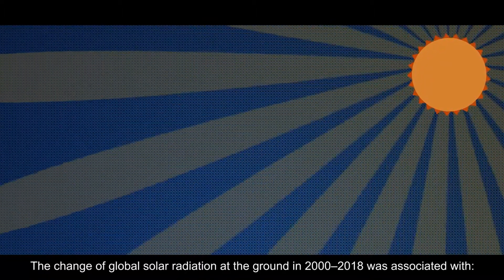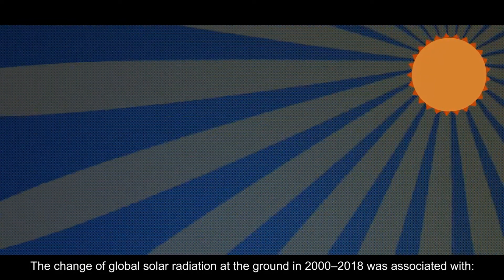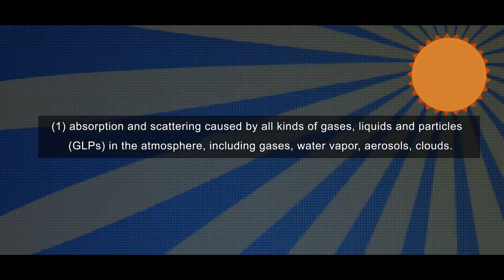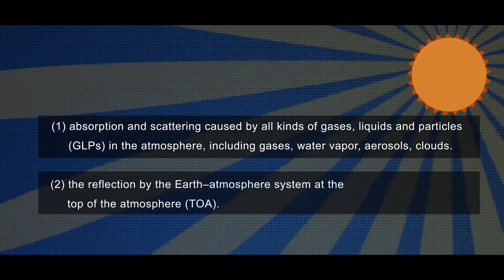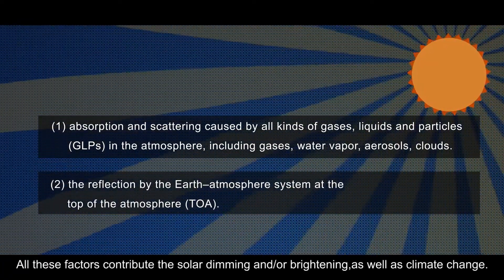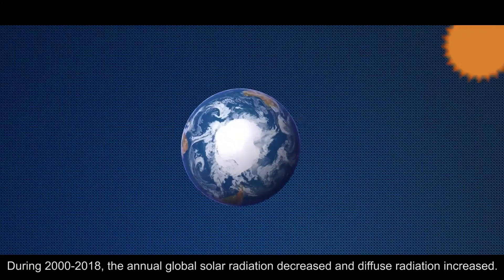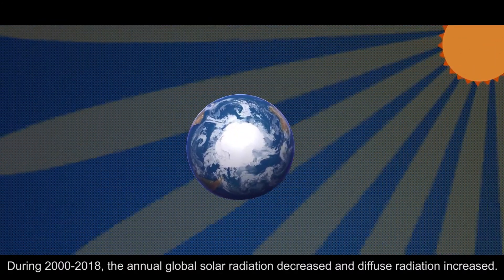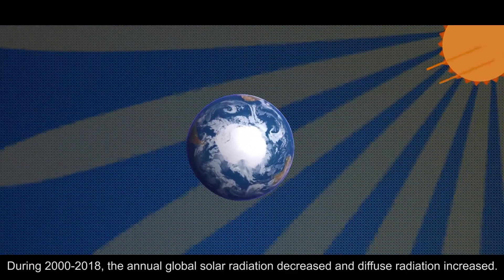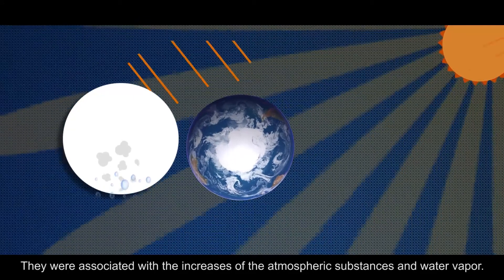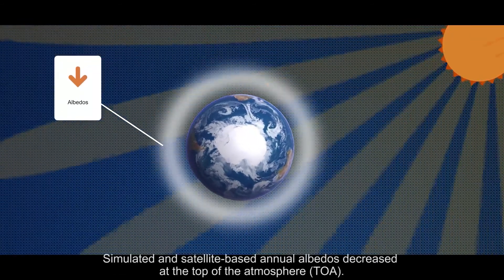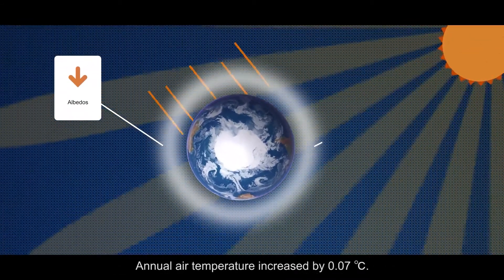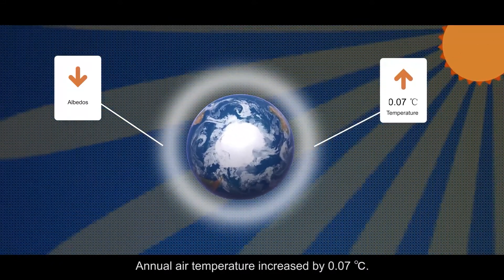The change of global solar radiation at the ground in 2000–2018 was associated with absorption and scattering caused by all kinds of gases, liquids and particles in the atmosphere, including gases, water vapor, aerosols, clouds, and the reflection by the earth-atmosphere system at the top of the atmosphere. All these factors contribute to solar dimming and/or brightening as well as climate change. During 2000–2018, the annual global solar radiation decreased and diffuse radiation increased, associated with increases of atmospheric substances and water vapor. More energy was lost in the atmosphere by absorption. Simulated and satellite-based annual albedos decreased at the top of the atmosphere. Annual air temperature increased by 0.07 degrees centigrade.